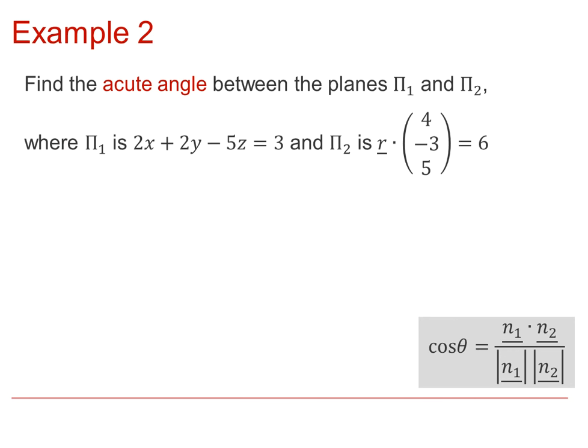In this second example, we are again asked to find the acute angle between two planes. Slightly different notation and form of equation is used. So for plane 1, we can see that the normal is 2, 2, and minus 5, from the Cartesian equation. And we can see from the scalar product equation of a second plane, that the normal is 4, minus 3, and 5.